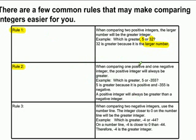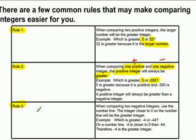Rule two: when comparing one positive and one negative, the positive will always be greater. For example, five and negative three hundred and fifty-five — well, five is greater because it's positive.